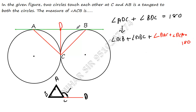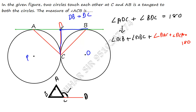Now let's understand something interesting. Let's say D is an exterior point to the circle with center O. Since tangents drawn from the same exterior point to a circle are equal, we can say DB equals DC. Similarly, D is exterior to the circle with center P, so AD equals DC.